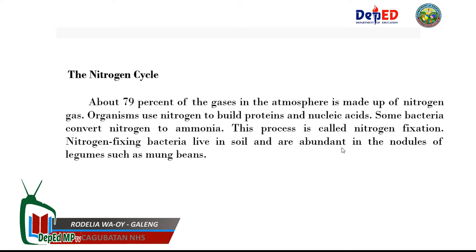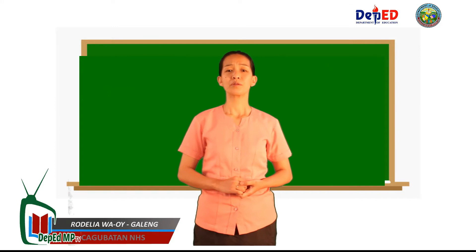The nitrogen cycle: about 79 percent of the gases in the atmosphere is made up of nitrogen gas. Organisms use nitrogen to build proteins and nucleic acids. Some bacteria convert nitrogen to ammonia in a process called nitrogen fixation. Nitrogen-fixing bacteria live in soil and are abundant in the nodules of legumes such as mung beans.